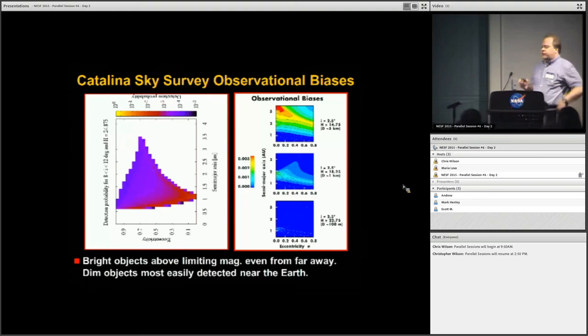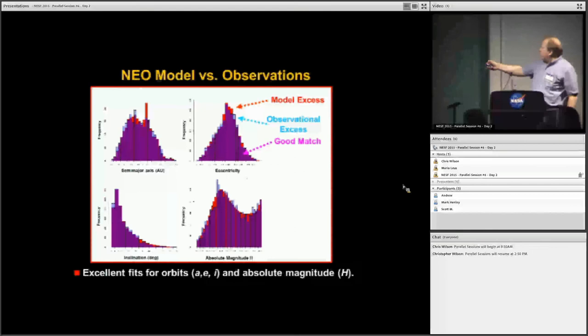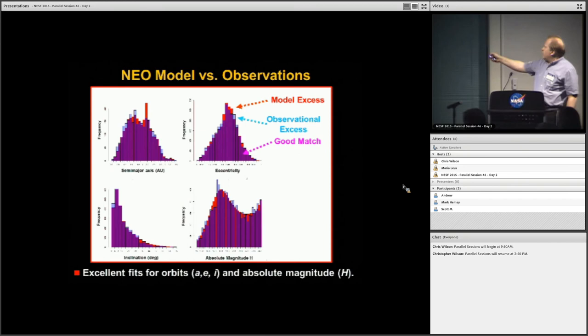What we did is we took the observational selection effects, multiplied them by every possible combination of our sources, and then compared it to the data. Here's a representation of our best fit. The purple here is where we have a good match in semi-major axis, eccentricity, inclination, and absolute magnitude, which is sort of a proxy for diameter. Big objects are over here and small objects are there. Where you see red is where we have too many model objects. And where you see this kind of light blue is where we have too many observed objects. You can see for the most part we do a pretty good job. The match is very satisfying. We are pretty gratified by all this.